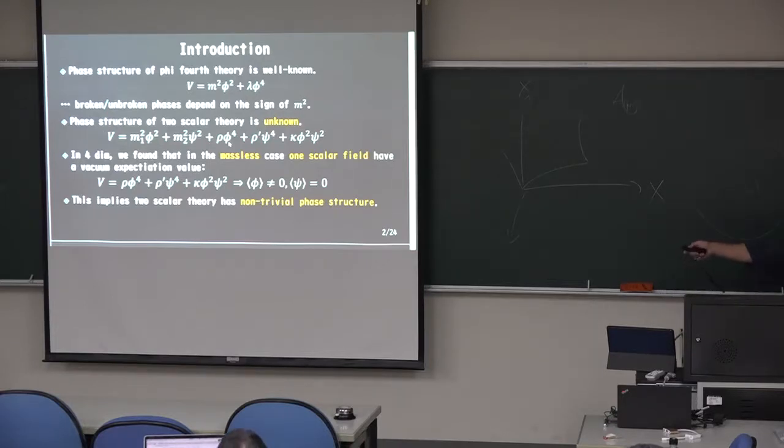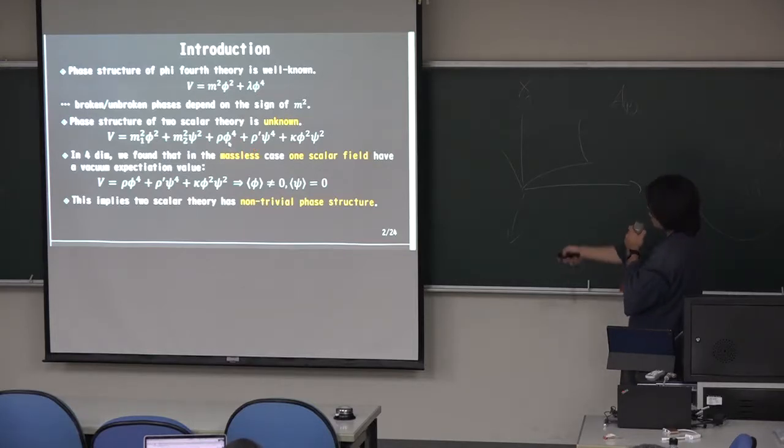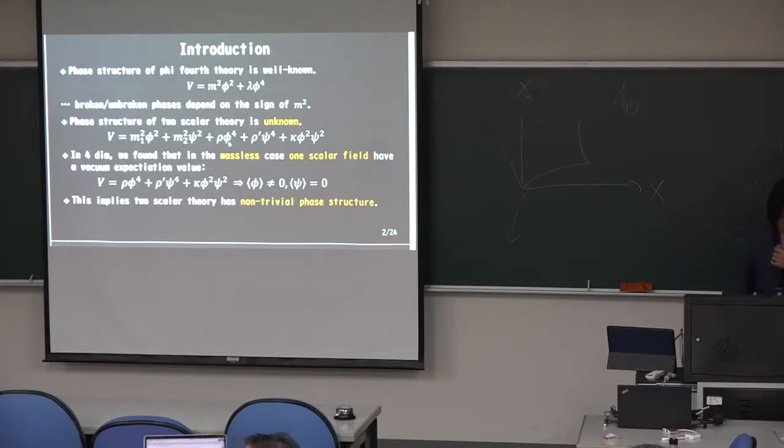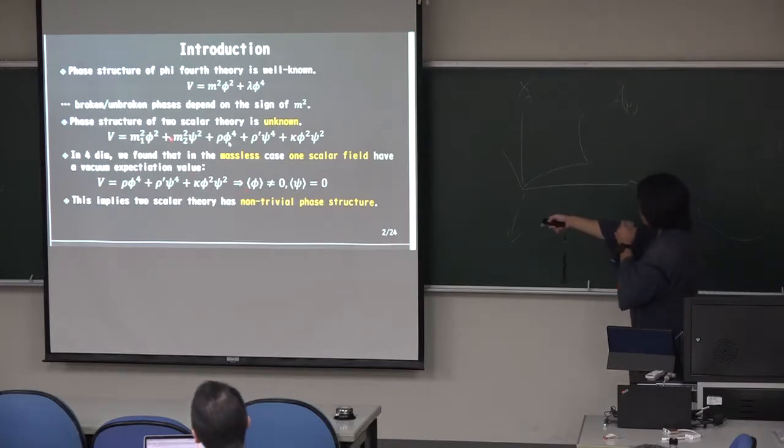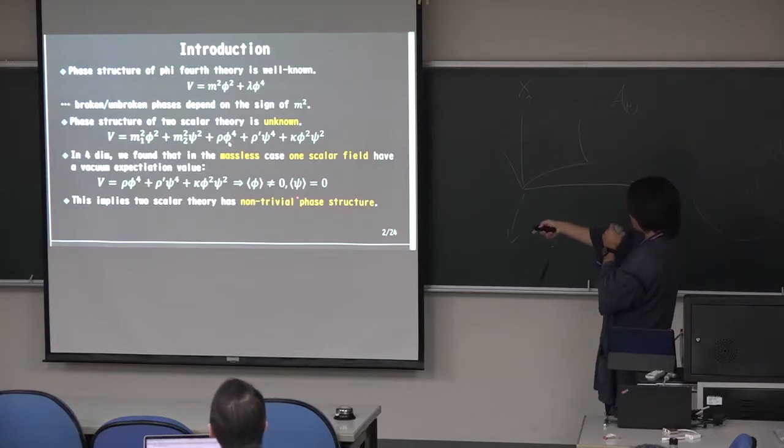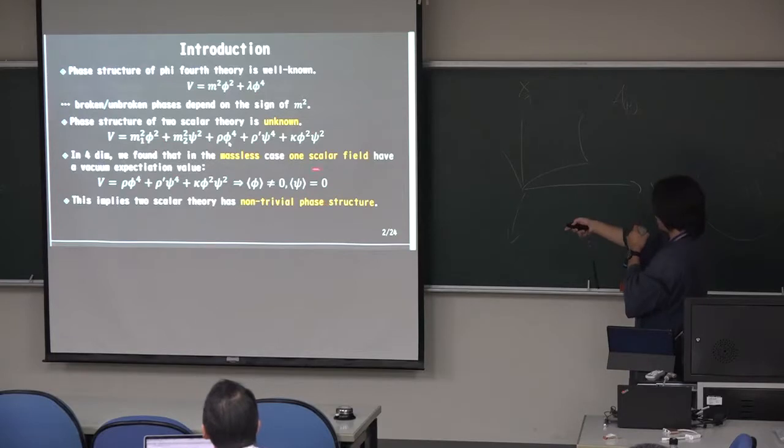But a basic structure of two scalar theory is unknown. So maybe the potential is given by this, by four master four, four, three R square. In four dimensions, we found that the master's case, and in that case, one scalar field has a vacuum relaxation value. Right? So in the master's case, in the vacuum, one scalar field has a vacuum relaxation value, and the other half not.